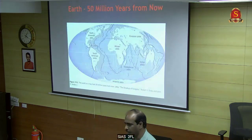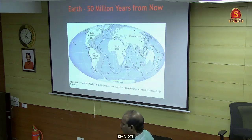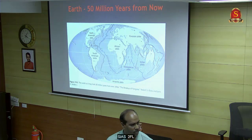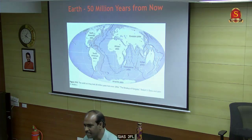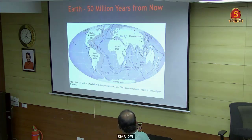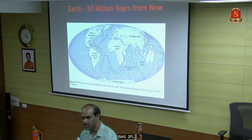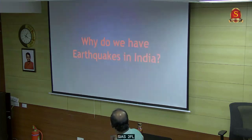After 50 million years, you can see that the boundary line is not there - it means the earth is going to settle in the next 50 million years. Scientists say this is what is going to happen. The era mark shows how the plates are moving.